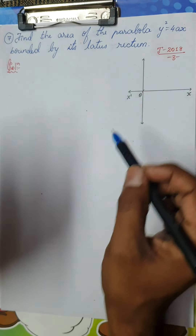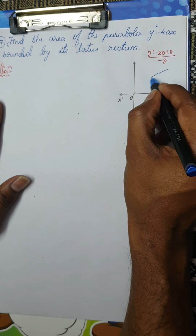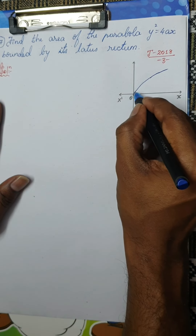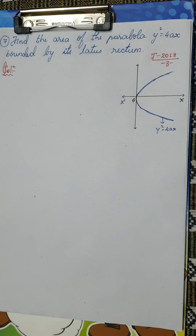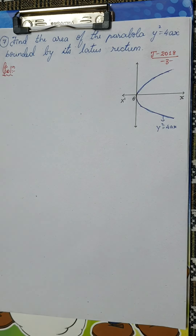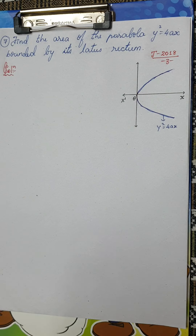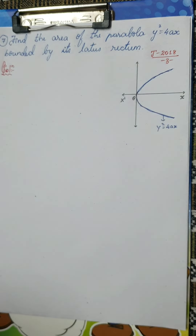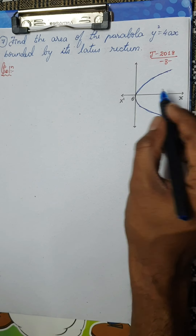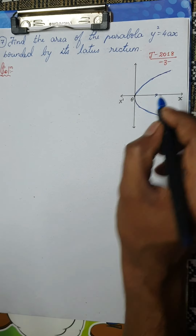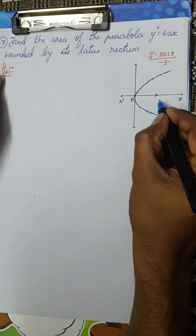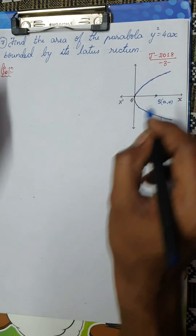First of all, let us draw the parabola y² = 4ax. We know y² = 4ax is a parabola which is facing right — we have seen this in detail in previous sessions. So, y² = 4ax is a parabola which is facing right. Now, my next question involves the term 'bounded by its latus rectum'. So, what is actually the latus rectum? If you have learned the concept of parabola in detail in first PUC, as this parabola is facing right, this is the vertex at the origin, and we also call something called the focus of the parabola.